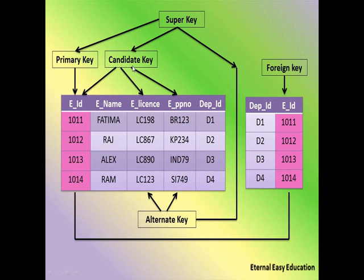If you have a candidate key in each column, you can set a primary key. It depends on the developer. Among the candidate keys, you set one as primary key; the remaining are the alternate keys. Alternate key, candidate key, and primary key are all super keys.